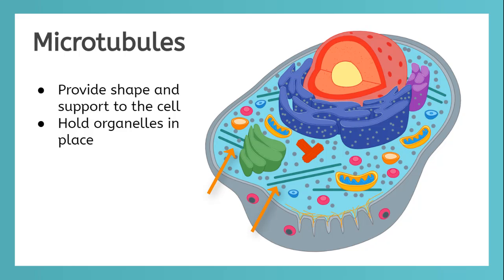If the plasma membrane acts as the cell's skin, then the thin green rods act as the cell's skeleton. These are called microtubules. They provide the shape of the cell and hold the organelles in place.